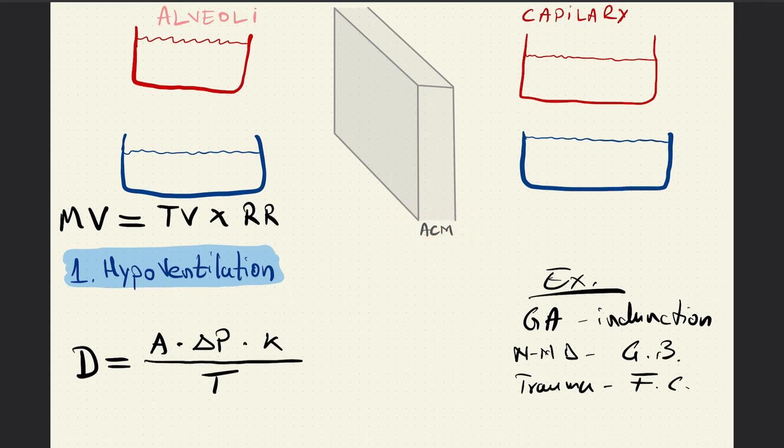In hypoventilation, the surface area is normal, the thickness of the alveolo-capillary membrane is normal. The issue that will cause hypoxemia is the pressure gradient.